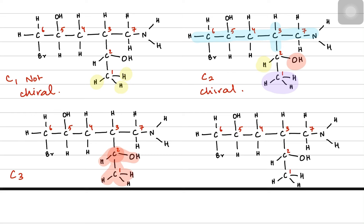That whole structure is one group. On top it has hydrogen, on the right side it has a CH2 and NH2 group which is the purple part — carbon 7 — and on the left side it has this whole three-carbon chain. Focus on the whole chain as a different group. So carbon 3 is also a chiral carbon.